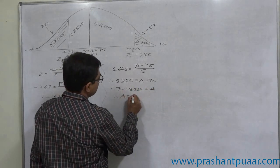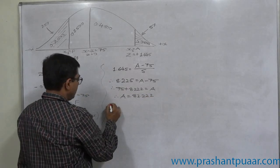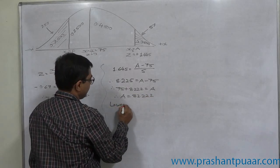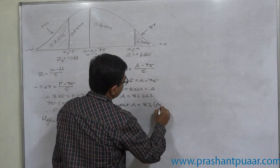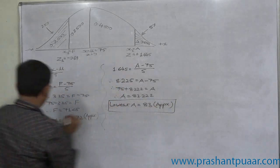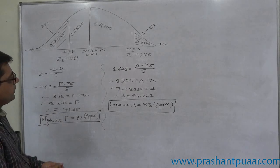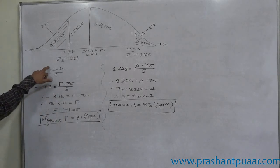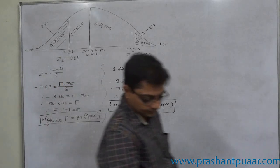Therefore A equals to 83.225, so lowest A can be approximately 83 marks. In this case we found the missing values of x out of the formula of z-score.